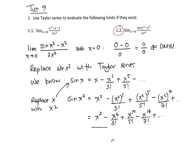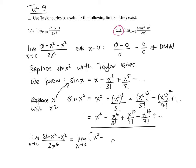Now we use this Taylor series in our limit. The limit as x goes to zero of sine of x squared minus x squared over 2x to the sixth equals the limit as x goes to zero, replacing sine of x squared with x squared minus x to the sixth over 3 factorial plus x to the ten over 5 factorial minus x to the 14 over 7 factorial, with a minus x squared still in the numerator, and 2x to the sixth in the denominator.